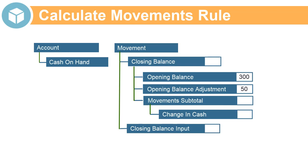Your business process may require you to load period and account balances rather than current period movements. If you enable the Calculate Movements system rule, you can load period and closing balances to the closing balance input member, and the rule will calculate the current period movement.